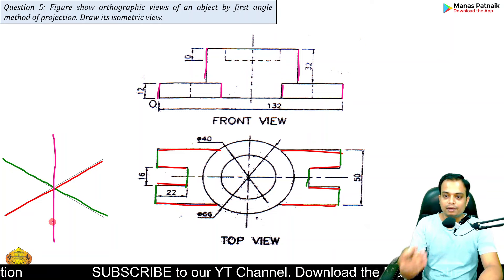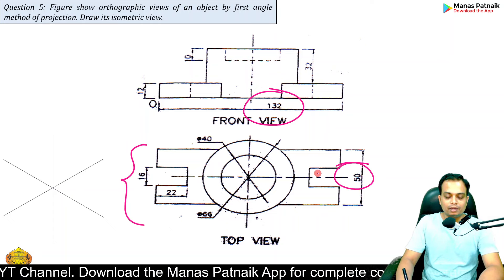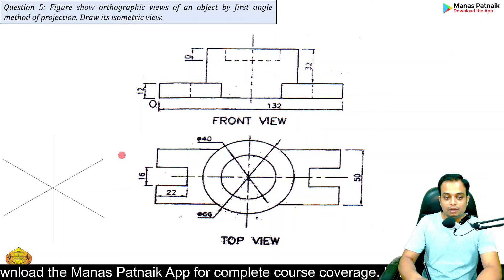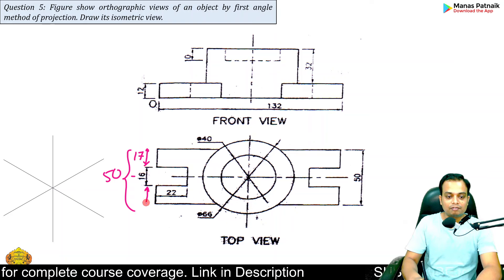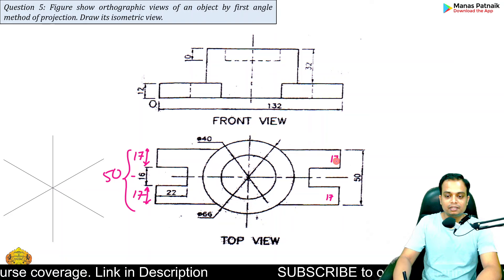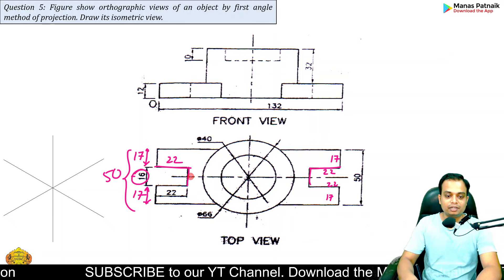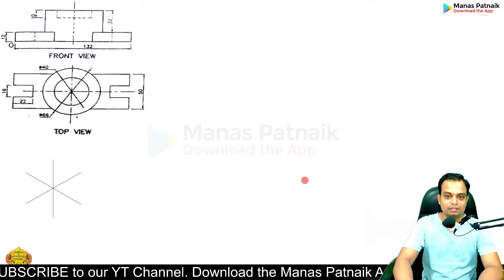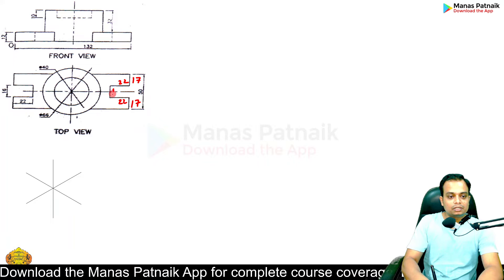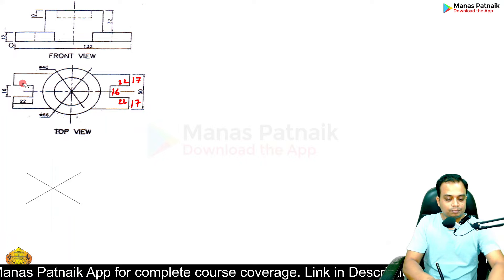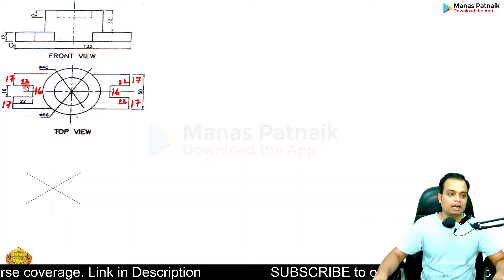The maximum length is 132 and the maximum width is 50. Since the width is 50, 50 minus 16 gives you 34, and half of 34 is 17 — so you get 17 on each side. The value 22 appears twice as well, and 16 is also mentioned. So the extracted dimensions are: 17, 17, 22, 22, and 16.